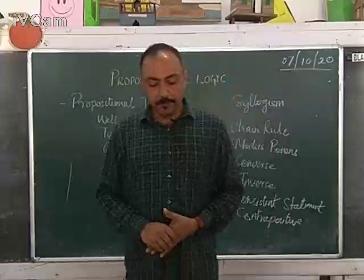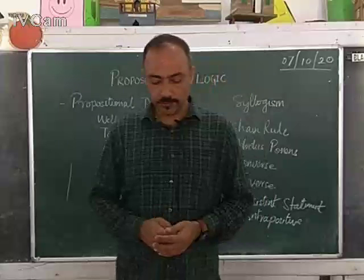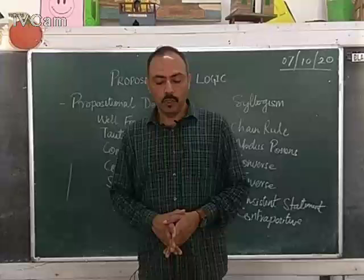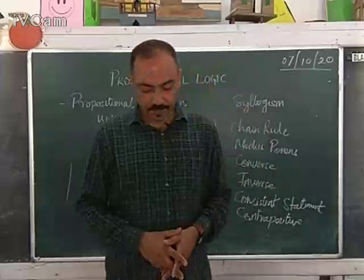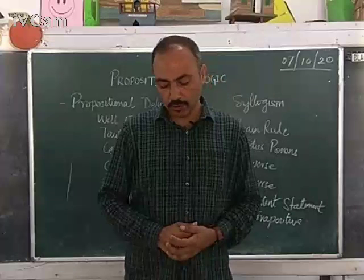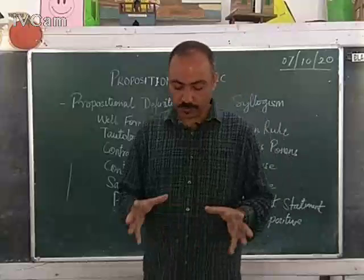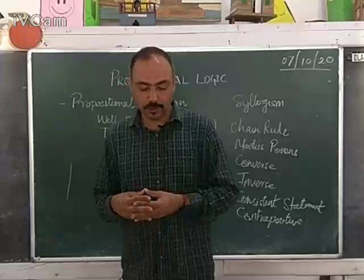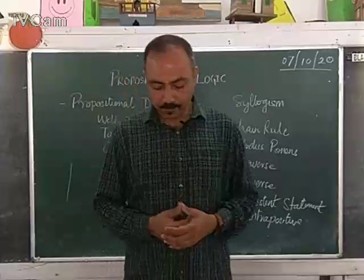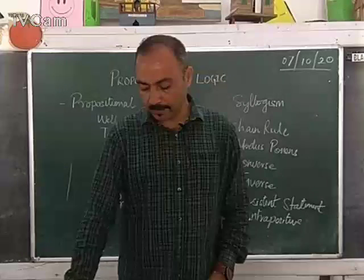Premise: it is a proposition from which a conclusion is drawn. Syllogism: it is a form of logical reasoning in which a logical conclusion is drawn from two or more premises. The premises share a common element called the middle term.